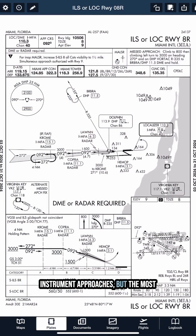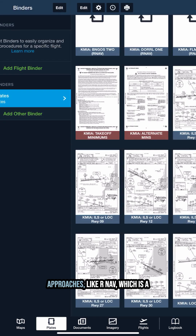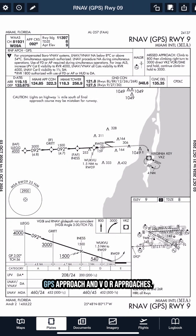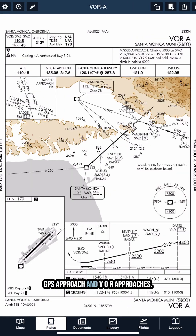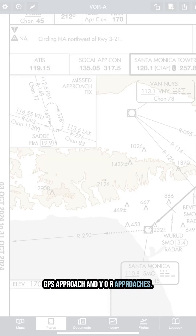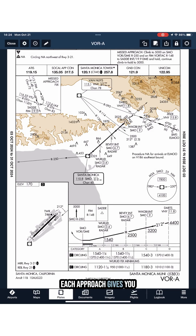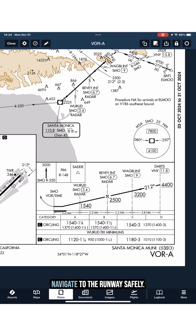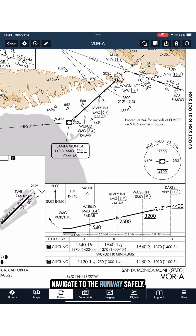There are several types of instrument approaches, but the most common are precision approaches like the ILS and non-precision approaches like RNAV, which is a GPS approach, and VOR approaches. Each approach gives you specific guidance on how to navigate to the runway safely.